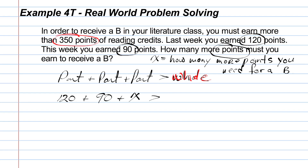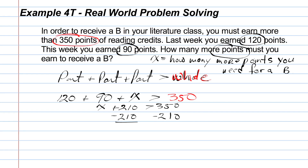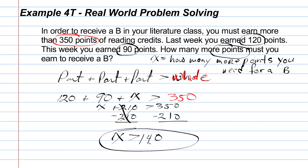That gives us 120 plus 90 plus X is greater than 350. Adding 120 and 90 gives 210, so X plus 210 is greater than 350. Applying the subtraction property of inequality, subtract 210 from both sides. X must be greater than 140 points. Since you need more than 350 points — not equal to 350 — you need more than 140 additional points, meaning 141 or more points.